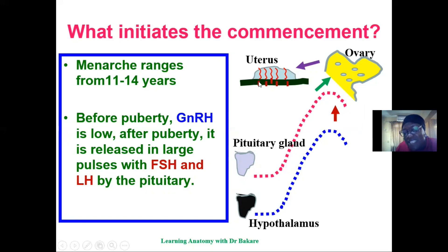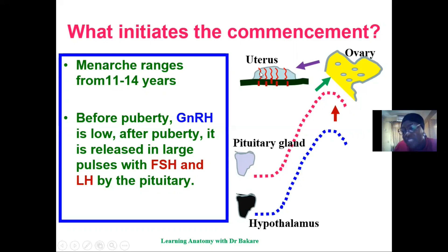In the stratum basalis you can see straight arteries aligned along its configuration, while in the stratum functionalis there are spiral arteries that are coiled. The coiled spiral artery is a continuation of the straight artery — they straighten in the basalis and become coiled as they move into the functionalis. This is the configuration the endometrium lining presents.